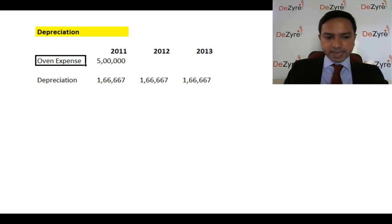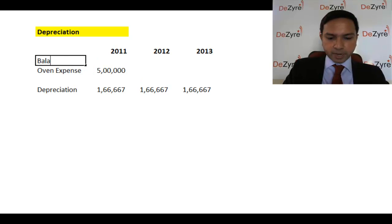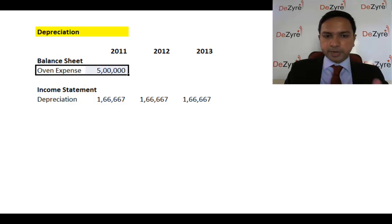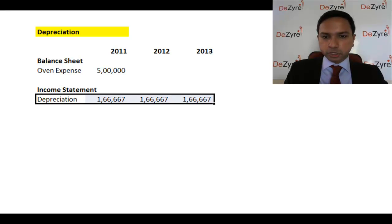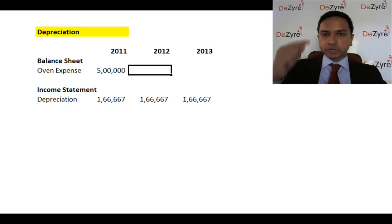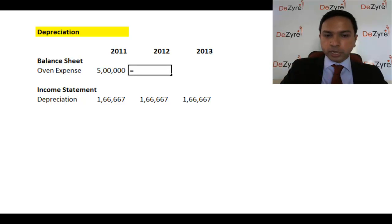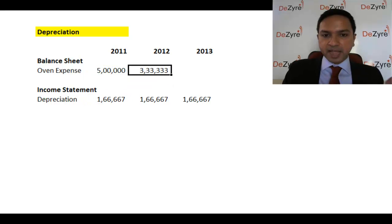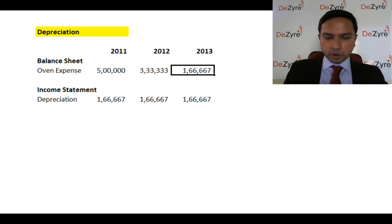The oven purchase goes on the balance sheet as a capitalized expenditure, and the proportional amount each year is the expense on your income statement — that is your depreciation. As you keep depreciating, the value of the asset on the balance sheet is no longer five lakhs; it's the initial value minus what it has lost each year, and then that becomes the new value the following year.